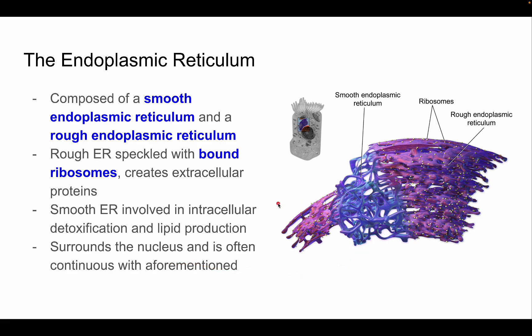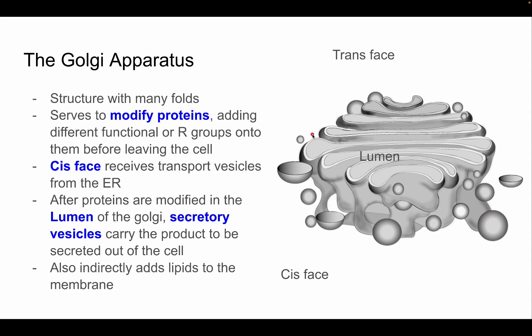The Golgi apparatus is a highly stacked and folded structure in the cell, composed primarily of phospholipid bilayers. It serves to modify proteins by adding different functional R-groups onto them before they leave the cell. A video on R-groups and functional groups important for biology should be available as well.